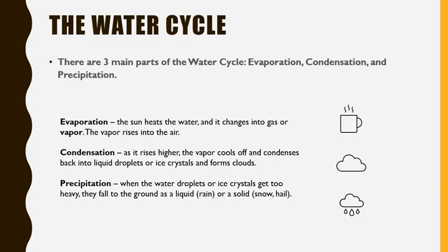We'll be learning more about the three parts of the water cycle: evaporation, condensation, and precipitation. Evaporation is when the sun heats the water and it changes into gas or vapor — water vapor. The vapor rises into the air. Once it gets up there, it cools down — that's called condensation. As it rises higher, the vapor cools off and condenses back into liquid droplets or ice crystals and forms clouds. Then those clouds get pretty heavy and precipitation happens. When the water droplets or ice crystals get too heavy, they fall to the ground as a liquid like rain, or a solid like snow or hail.